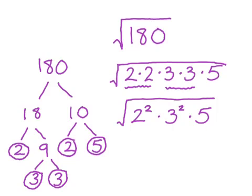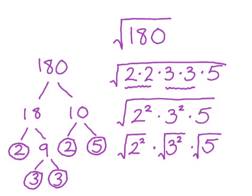So I'm going to go ahead and rewrite this first one as the square root of 2 squared, then times the square root of 3 squared times the square root of 5.